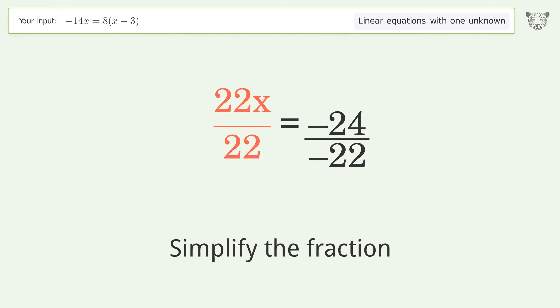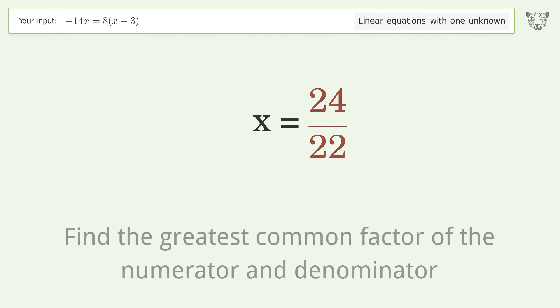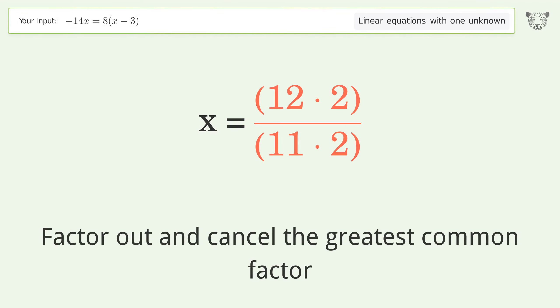Simplify the fraction. Cancel out the negatives. Find the greatest common factor of the numerator and denominator. Factor out and cancel the greatest common factor.